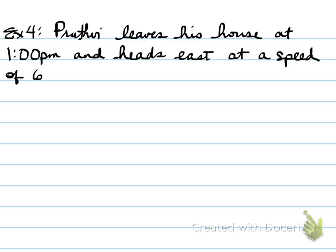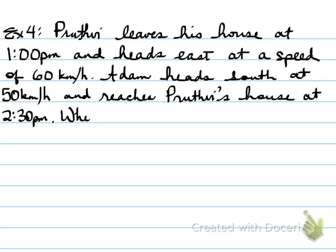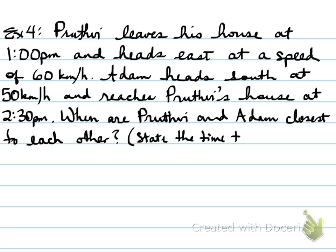All right, on to the next question. Example number 4. Pruthvi leaves his house at 1 p.m. and heads east at a speed of 60 kilometers per hour. Adam heads south at 50 kilometers per hour and reaches Pruthvi's house at 2:30 p.m. When are Pruthvi and Adam closest to each other? So you're to state the time to the nearest minute. What does that mean for us? Well, we need to be able to draw this out. This is one of those type of questions where you either get it, you don't, and there's not much of in between here. So it's going to be very important that you kind of follow along here. If you need to, rewind the video and go through it step by step. I will do my best.